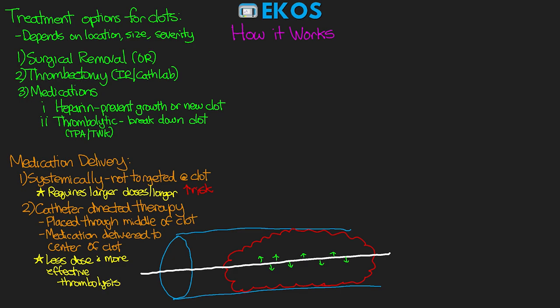Despite being more directed, especially with mature clots, sometimes the medication is not able to penetrate deep into the clot and is mostly wicked away with the blood flow going around the catheter. The thrombolytic leaks out into the center, but blood flowing through carries it along and it doesn't actually work its way up into the clot. Our goal is to activate TPA receptor sites on the clot to trigger lysis — if we can't get the medication to those receptors, the clot simply won't break down.